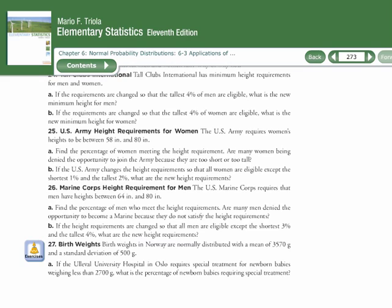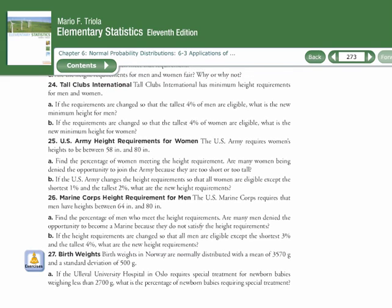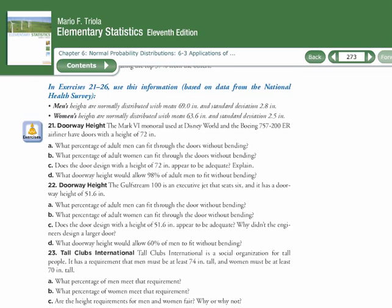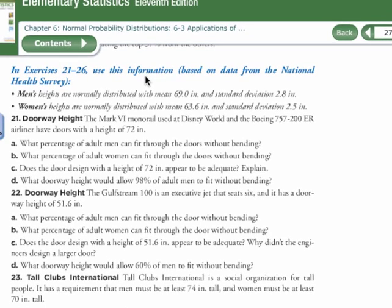Now, be careful that you need some information that occurs before the actual statement of the exercise. If you go up and you look a little bit before, it says in exercises 21 through 26, use this information. And then it tells you that men's heights and women's heights are normally distributed, and it gives you the mean and the deviation.